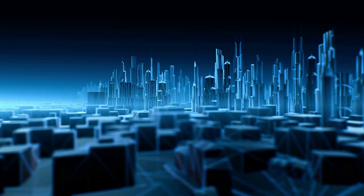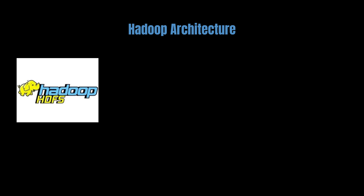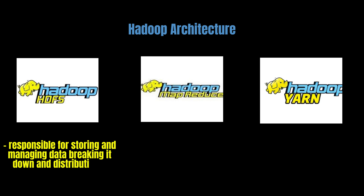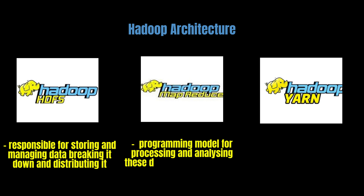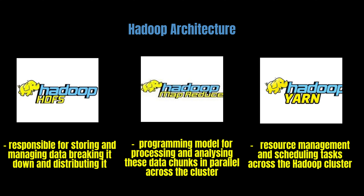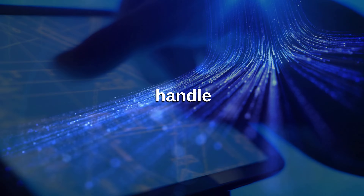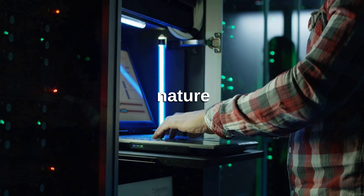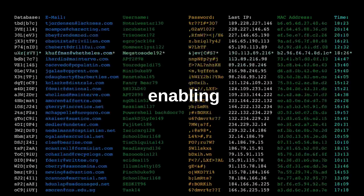Its architecture consists of three main components: Hadoop Distributed File System, MapReduce, and Yarn. The Hadoop Distributed File System is responsible for storing and managing data across the Hadoop cluster, breaking data into smaller chunks and distributing them across nodes in the cluster. MapReduce provides a programming model for processing and analyzing these data chunks in parallel across the cluster. Yarn, on the other hand, is responsible for resource management and scheduling tasks across the Hadoop cluster. One of the key benefits of this architecture is its ability to handle large volumes of unstructured data, which is common in AI applications. Hadoop's distributed nature allows it to store and process large datasets efficiently, enabling machine learning algorithms to analyze and extract insights from these data.